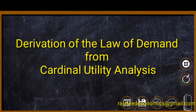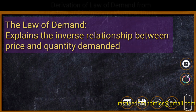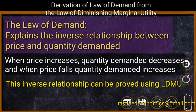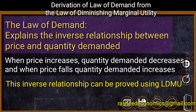We know that the law of demand explains the inverse relationship between price and quantity demanded. When price of a product decreases, the consumer will have a tendency to consume more and more units of the commodity. Similarly, when price increases, consumers will be reluctant to buy more units. This inverse relationship can be proved using the law of diminishing marginal utility.